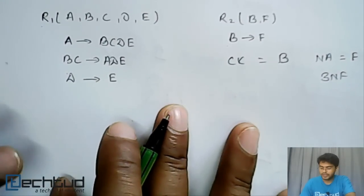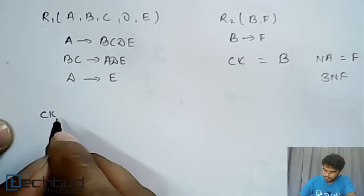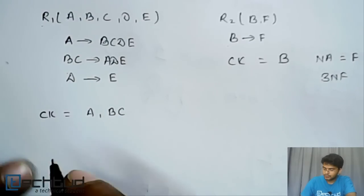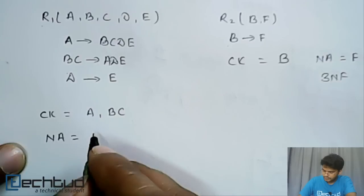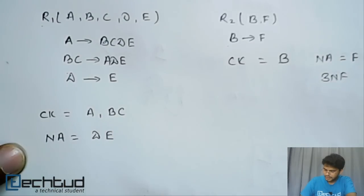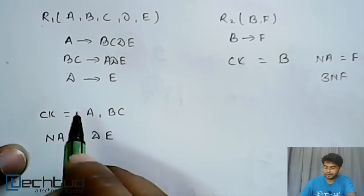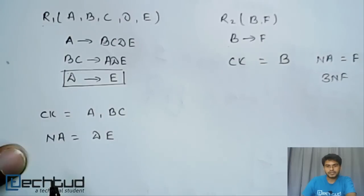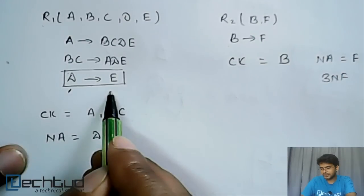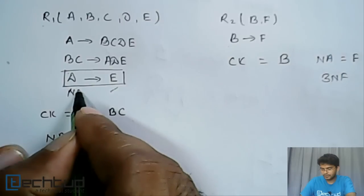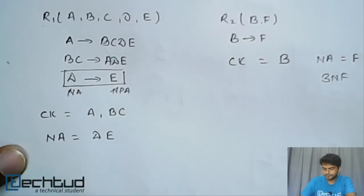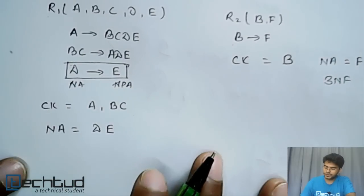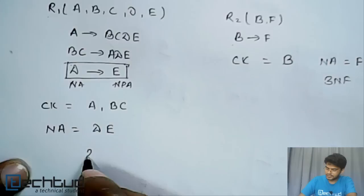Now let's look at relation R1. Here the candidate keys are A and BC, and the non-prime attributes are D and E. There is a functional dependency D determines E, which means a non-prime attribute is determining another non-prime attribute. This should not be the case for third normal form, so R1 is not in third normal form — it is in second normal form only.